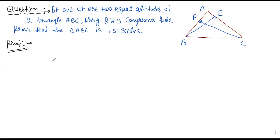In the question you can read here: BE and CF are two equal altitudes of triangle ABC. Using RHS — right angle hypotenuse side congruence rule — prove that triangle ABC is an isosceles triangle. An isosceles triangle means a triangle where two sides are equal.